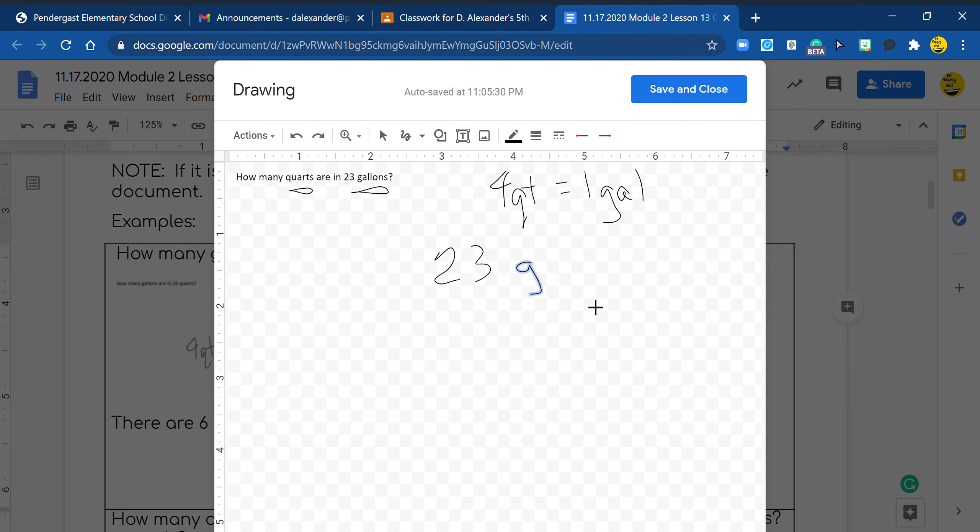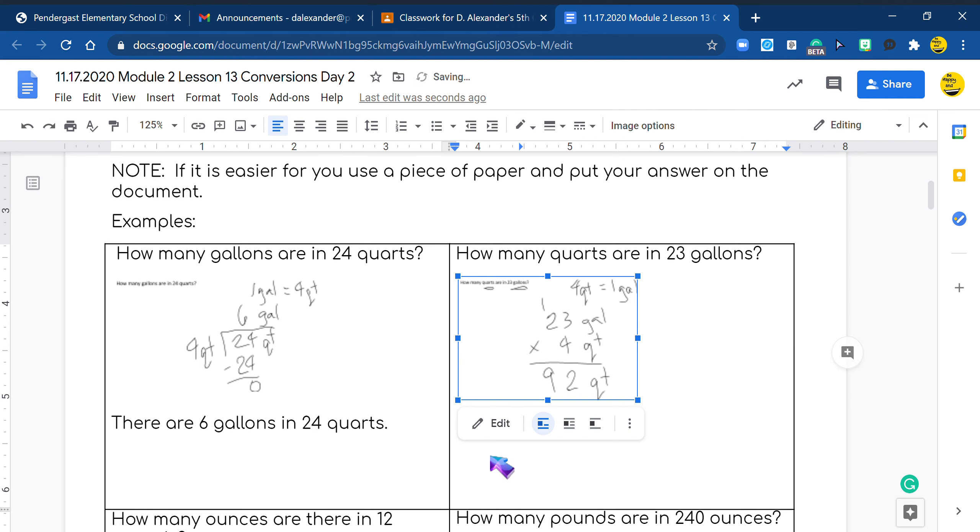I have quarts versus gallons, so I'm going to put my 23 gallons here. I'm going to multiply it by my four quarts because remember there's more quarts than gallons, because quarts is smaller than gallons. So I'm going to end up with quarts. So I'm going to do four times three, you guys are right, twelve. Four times two, good job, eight plus one, nine. Now we have 92 quarts which equals 23 gallons.